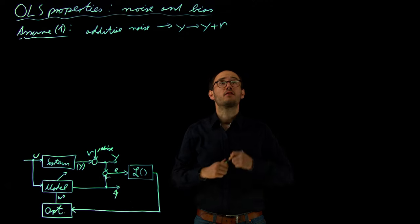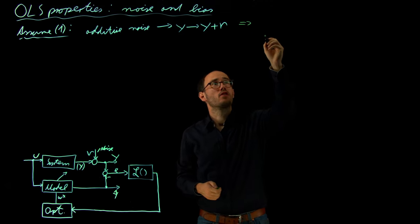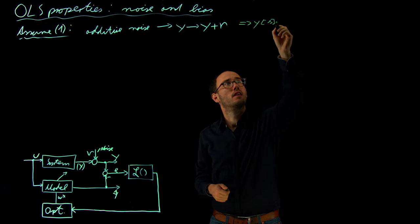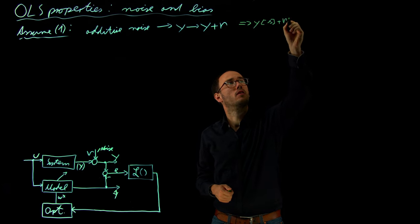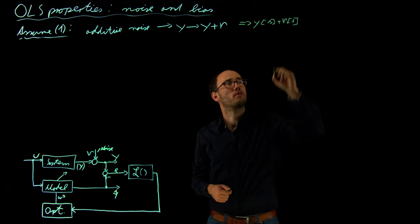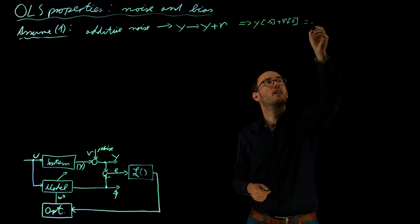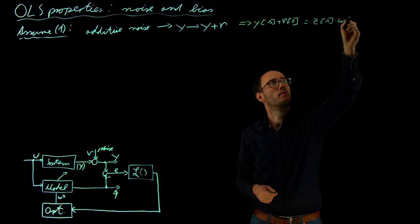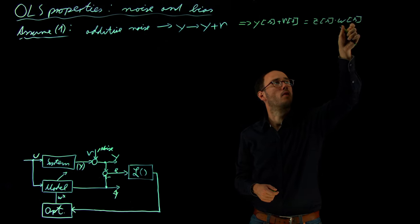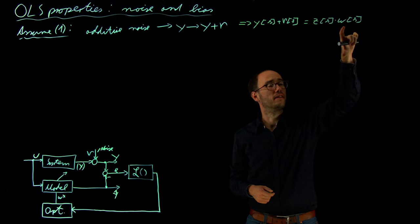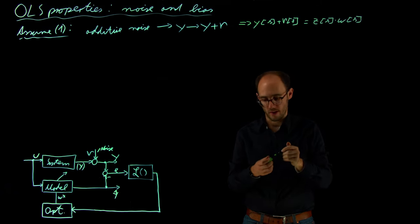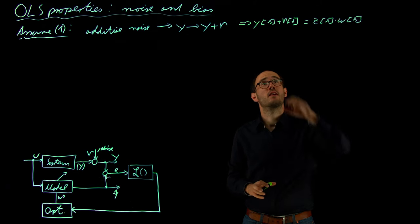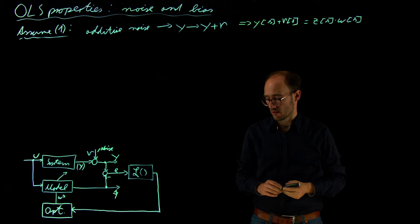That also means, of course, that our output equation becomes a little bit different. So that means Y of K is now added with nu of K. And that is Z of K times W of K, whereas W of K is a column vector and Z of K is a row vector from the regressor matrix. So our equation becomes a little bit different.